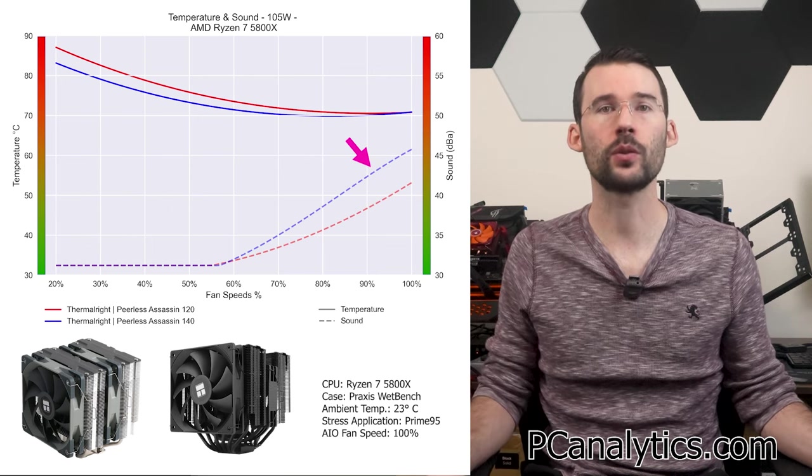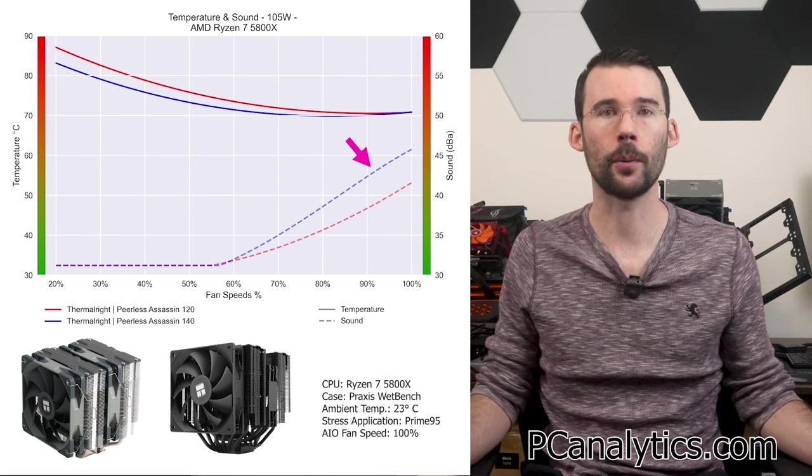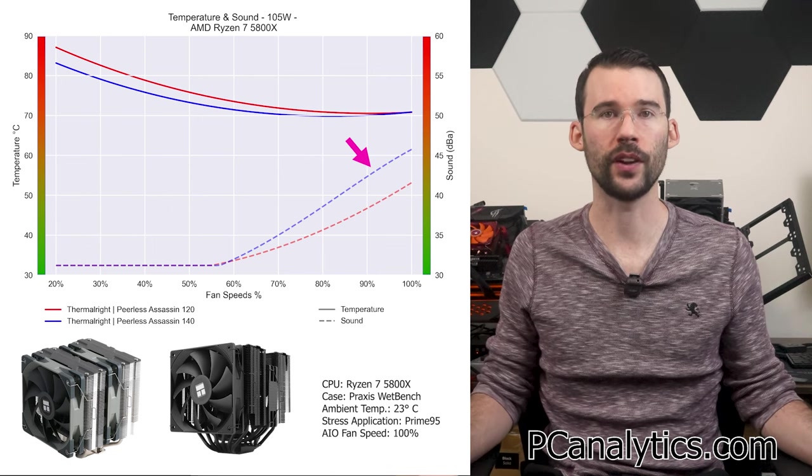Additionally, the Peerless Assassin 140 is noticeably louder at the higher RPMs, partially due to the larger fan size.